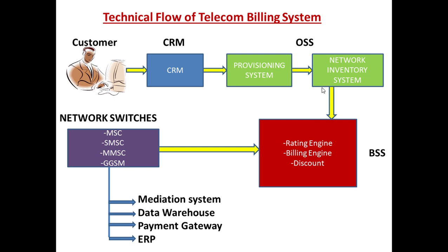The next part of OSS is the Network Inventory System. The Network Inventory System is also called NIS. It keeps all the network identifiers — identifiers meaning the unique identifiers by which a particular customer is identified — like a phone number, IP address, or email address.